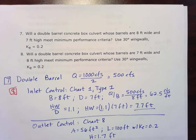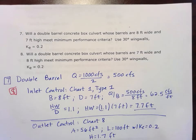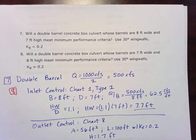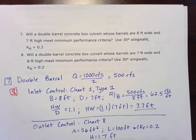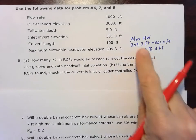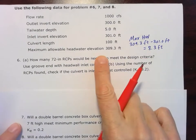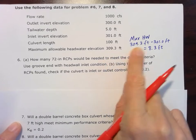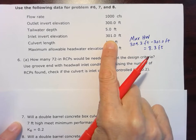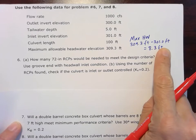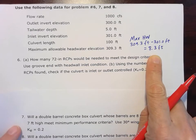And remember, we're checking what our big thing is for the performance criteria: are we going to exceed that maximum allowable headwater? We calculated that before. We knew the elevation was 309.3. We had to subtract the invert elevation to figure out that maximum headwater, and so it is 8.3 feet.